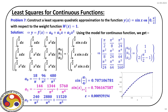This is precisely what we will do for reliability analysis with implicit performance functions. At discrete locations, we will solve the finite element model to evaluate the limit state function, and from those observations — like the black dots — we will fit a metamodel. That metamodel can be easily differentiated with respect to constituent random variables, allowing us to apply first-order or second-order reliability methods to solve implicit performance function problems.